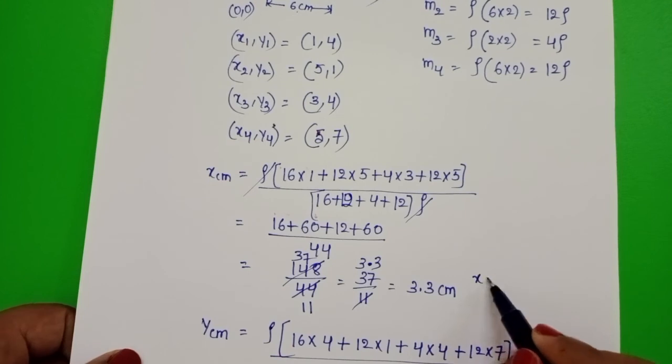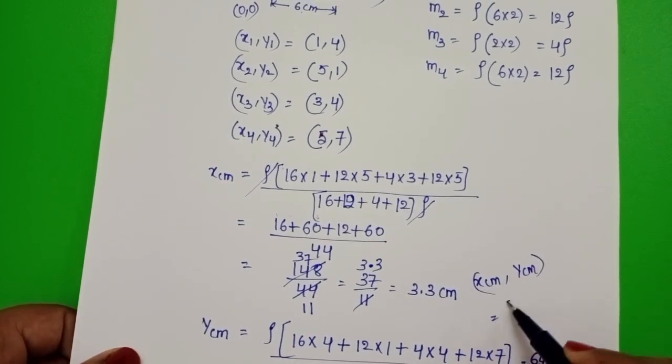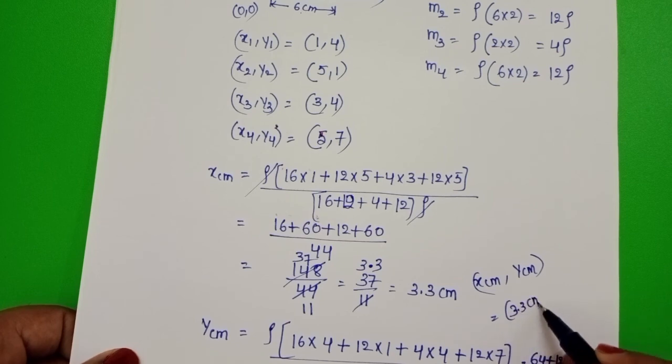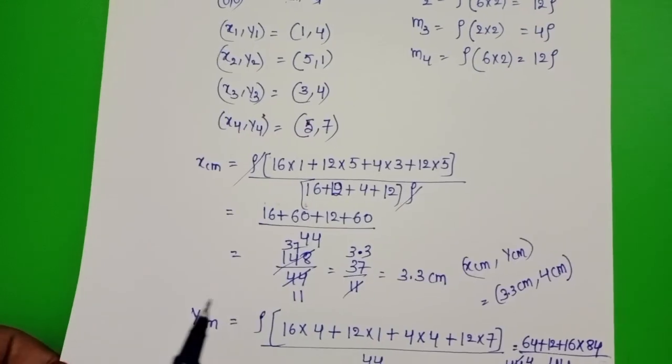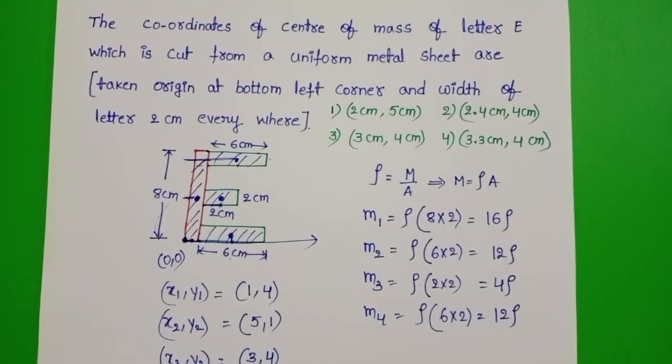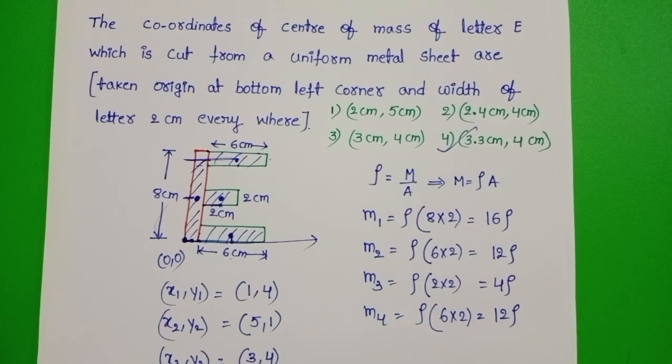So position of center of mass of the given letter E is 3.3 cm, 4 cm. Check the given options. Fourth option is correct.